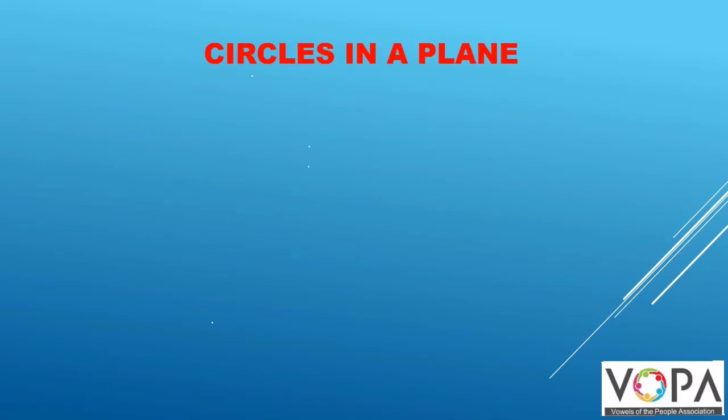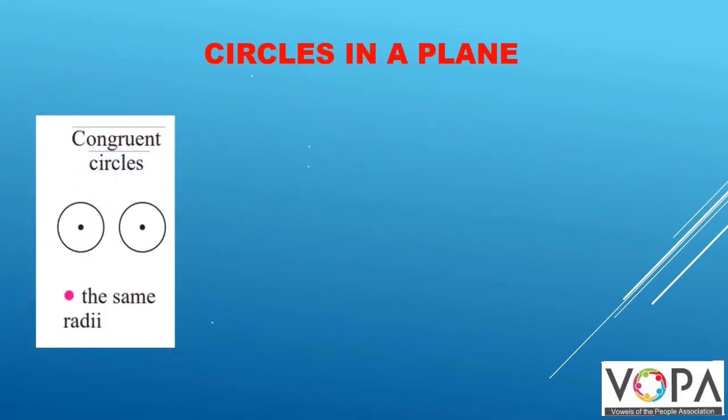Circles in a plane. Congruent circles. Two circles are said to be congruent if they have the same radii.